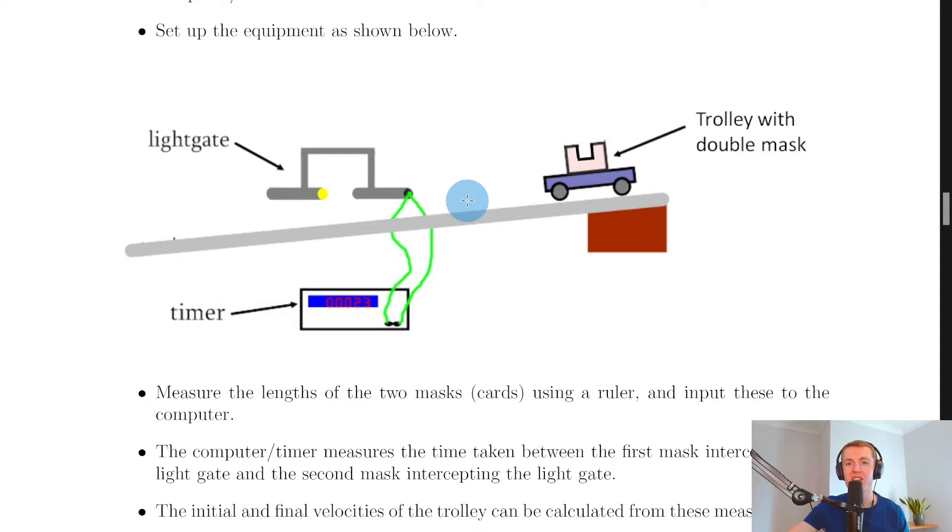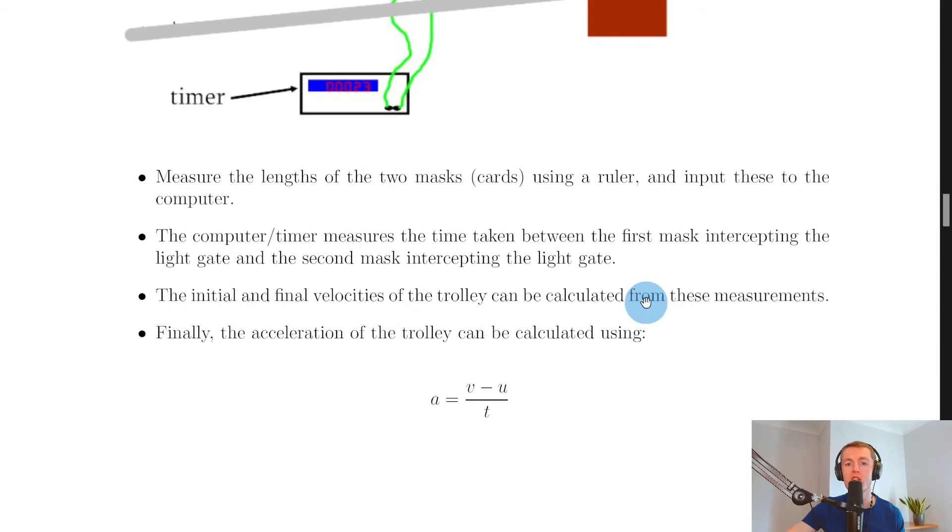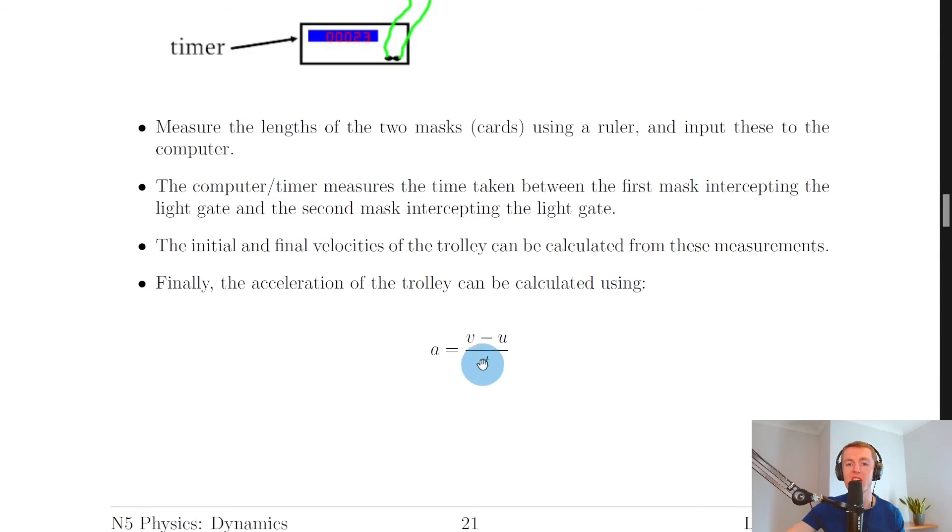If we look back at the picture, how does that actually work? Well, what the timer is actually going to do is it's going to measure three times. One of the times will be the time taken for the front of the whole mask to cut the light gate until the back of the whole mask cuts the light gate, and that will give you your time t which you use in the acceleration equation here.